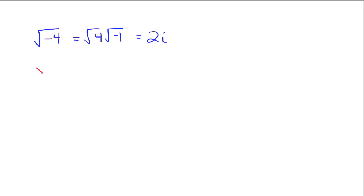What do you think the square root of negative 25 would be? Well, 25 is a perfect square and we know that goes to 5. And then because it's negative under there, that's where the imaginary unit comes into play and the little i comes out, so we have 5i. So the square root of negative 25 is just 5i. The square root of negative 9 is just 3i.